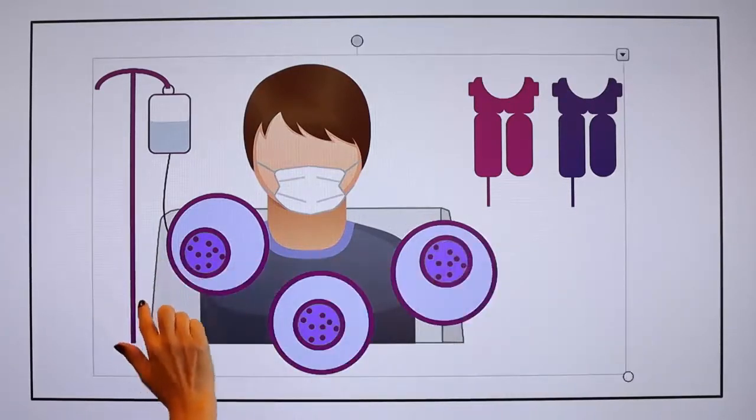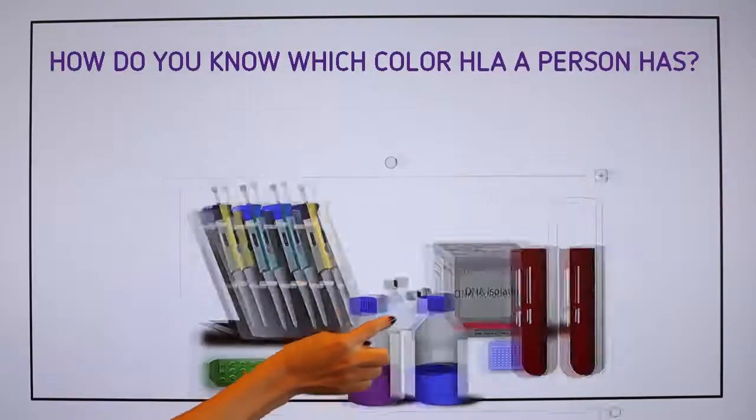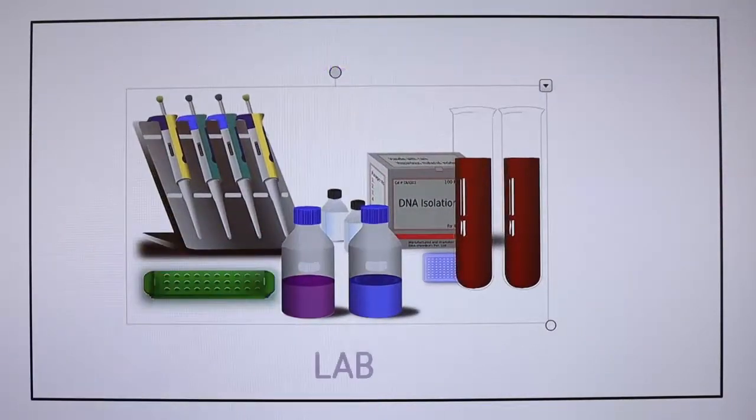Okay, but how do you know which color HLA a person has? Well, this is where the lab comes in. They can see this in our DNA.